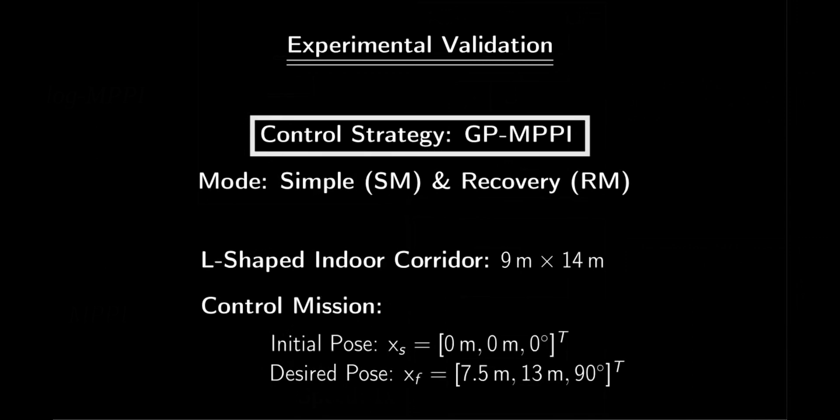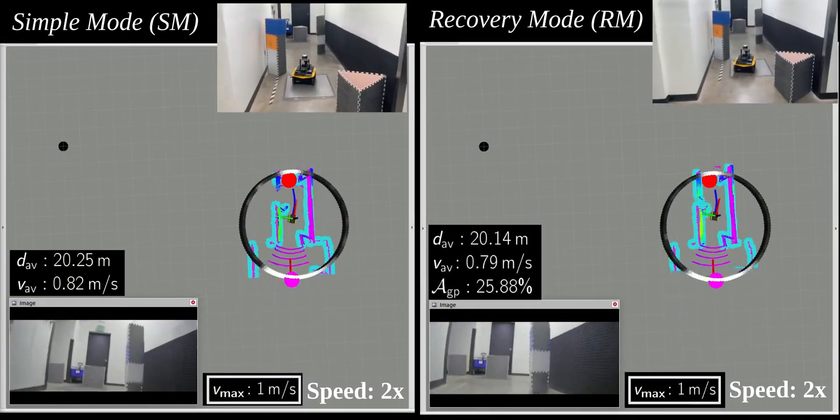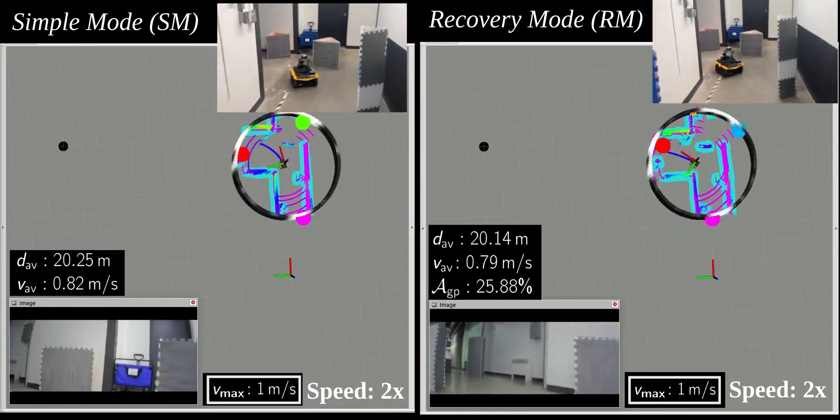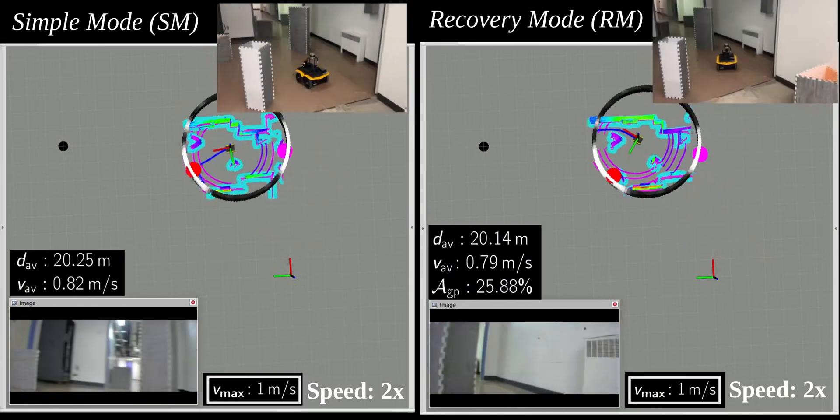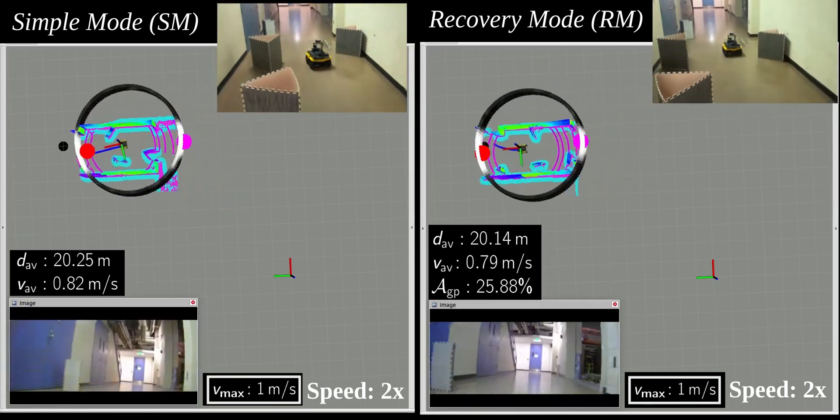Finally, we experimentally demonstrate the applicability of our proposed control strategy in a complex and unknown L-shaped indoor corridor environment. We can conclude that both operating modes ensure collision-free navigation in the given environment with an average linear velocity of 0.8 meters per second, without the risk of being trapped in local minima while moving towards their desired state.